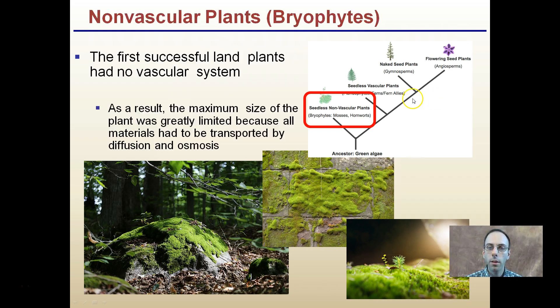So to start with, the reason why we say they're primitive is they're not too far away from green algae in our cladogram here. They are considered to be the first successful land plants and have no vascular system. As a result, the maximum size of the plant is greatly limited because all materials have to be transported by diffusion and osmosis. Even under ideal growing conditions, you'll see mosses are very short. They don't get very tall because they don't have this vascular system and everything has to go through the process of diffusion and osmosis, and this limits their overall height.